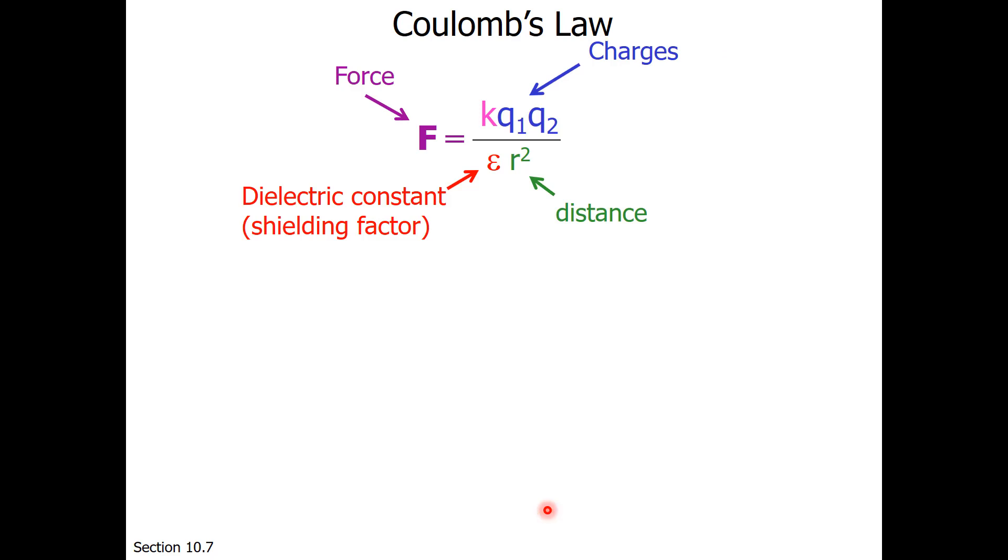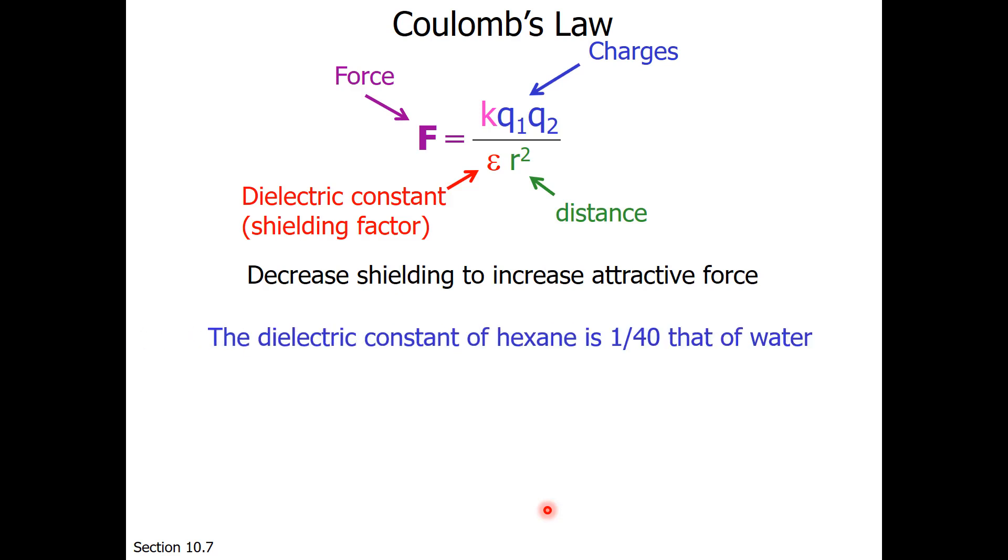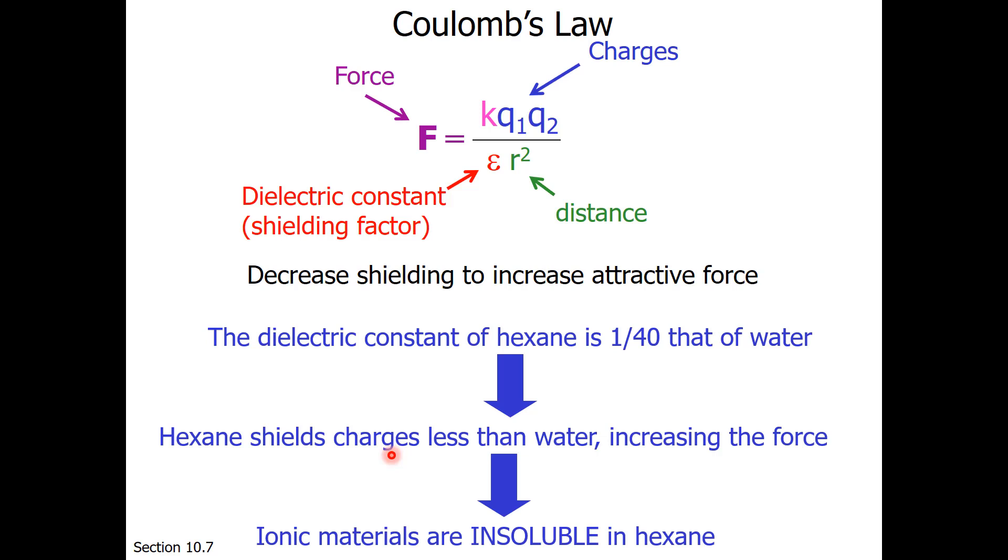One can also work with the denominator, and you can decrease shielding to increase the attractive force. The dielectric constant of hexane is 1 40th that of water, so hexane shields charges less than water, increasing the force between them. This would explain why sodium chloride is soluble in water, but not soluble in hexane. Hexane does a very poor job of shielding the sodium 1 plus and chloride 1 minus charges from each other. In general, ionic materials are insoluble in hexane.